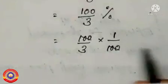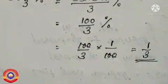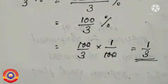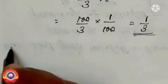Now cancel the zeros from both the numerator and the denominator. Therefore the fraction of 33 and 1 by 3 percentage is equal to 1 by 3.